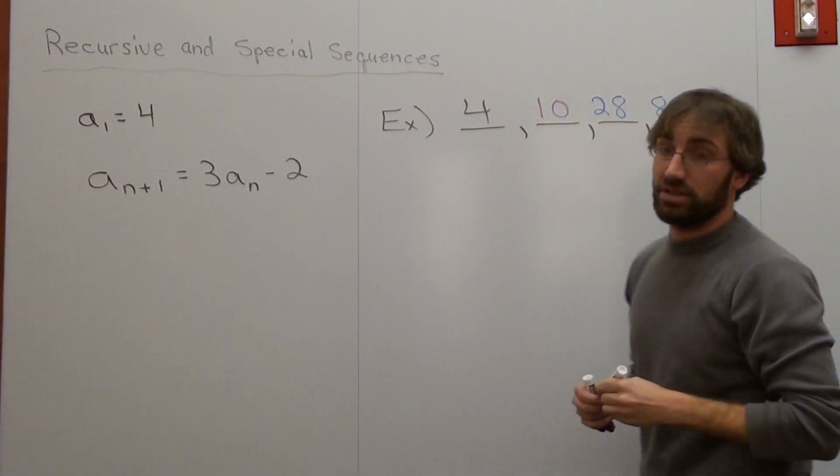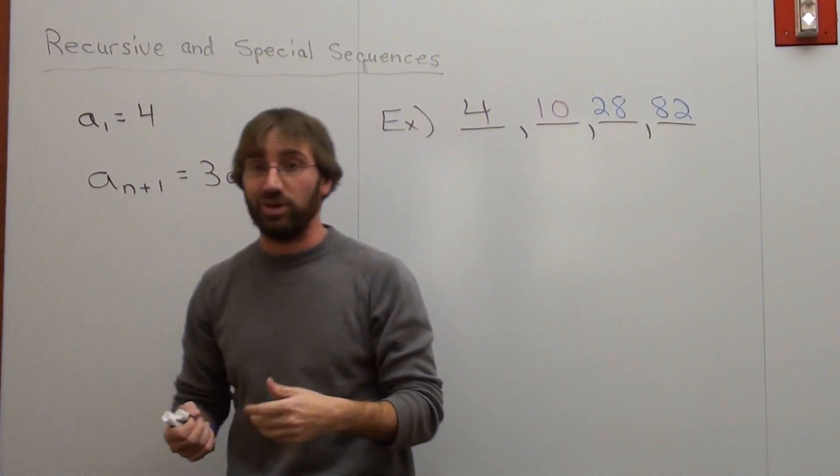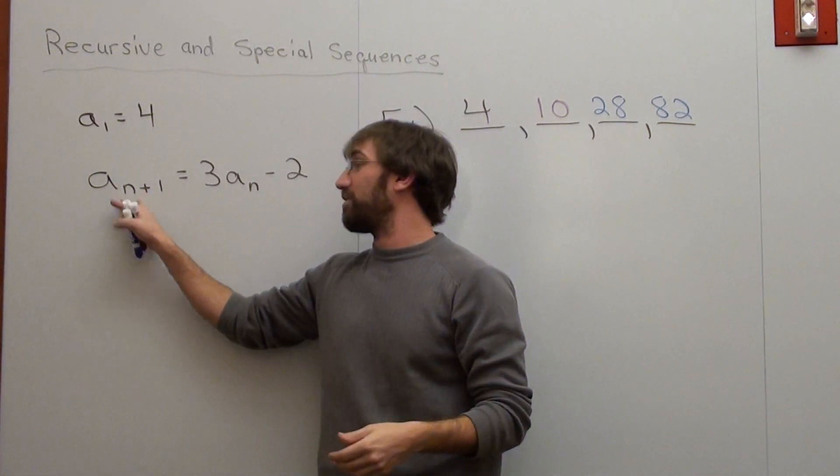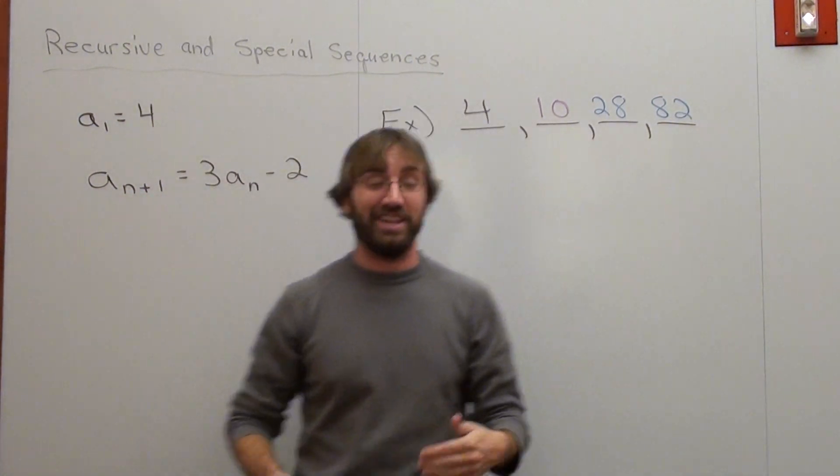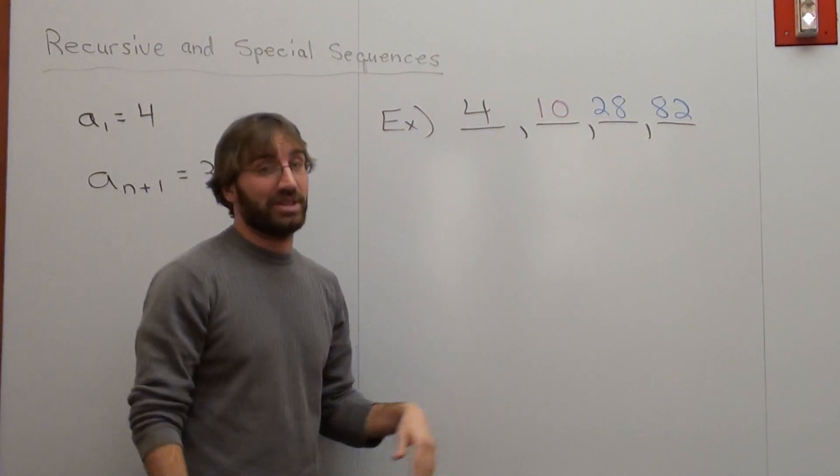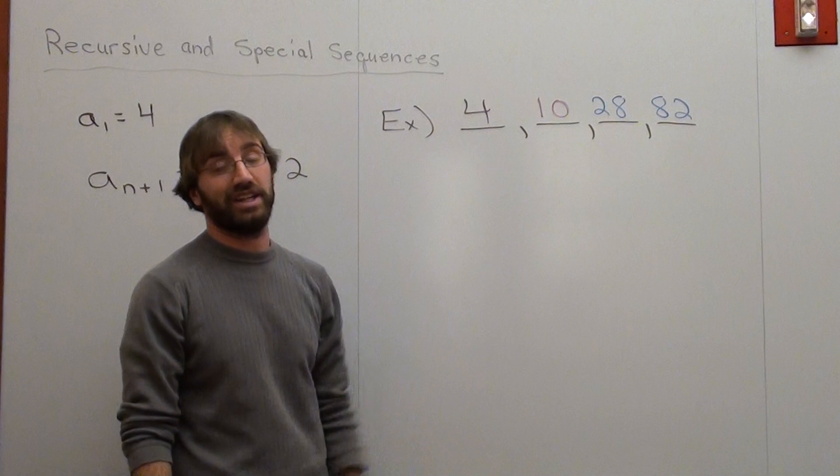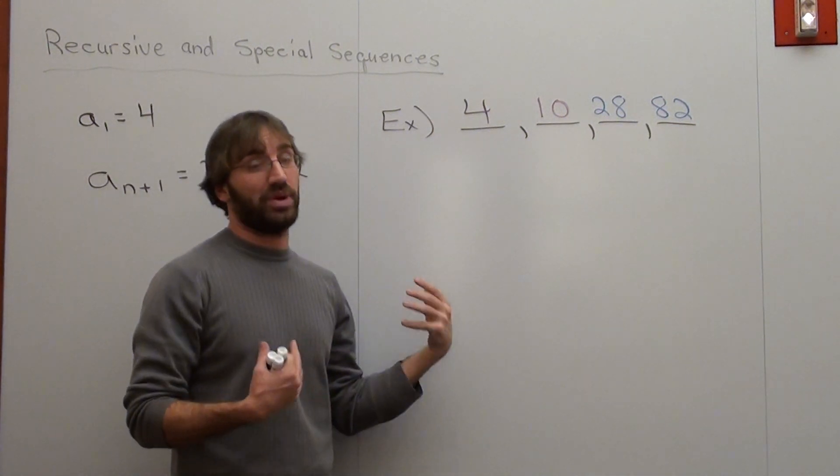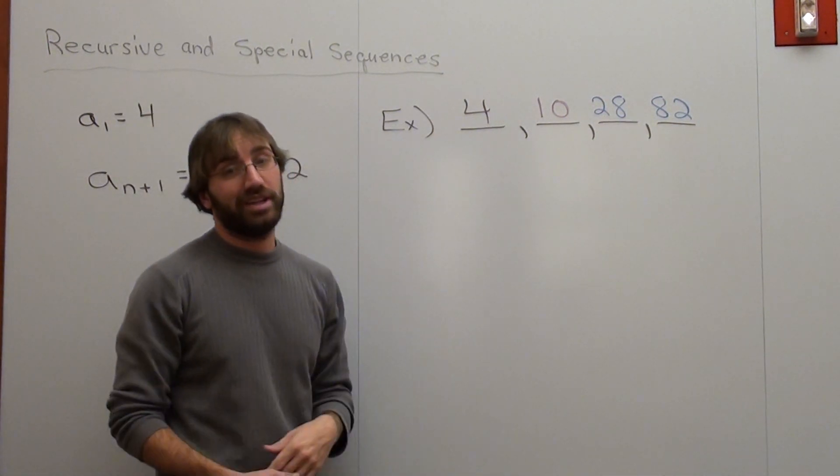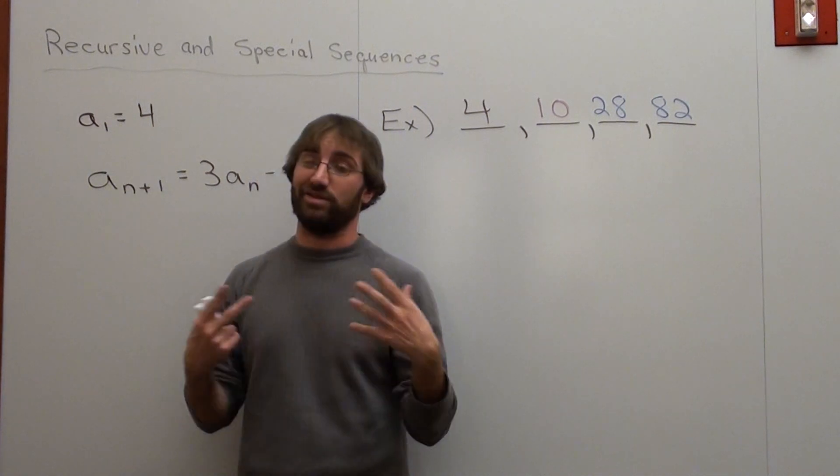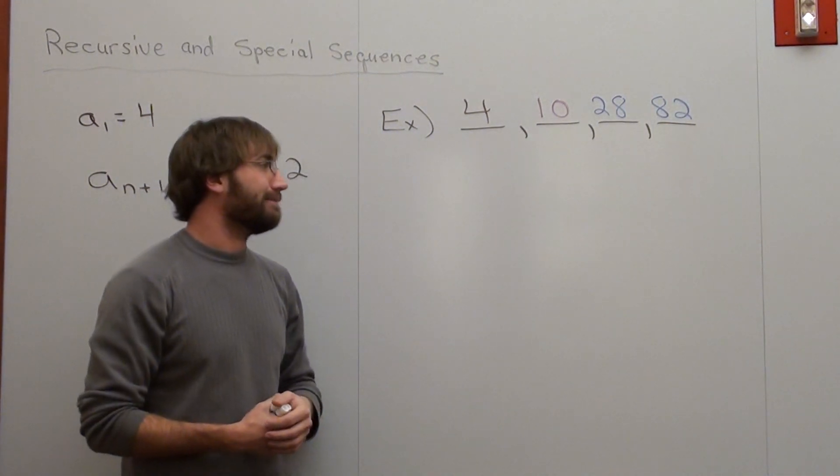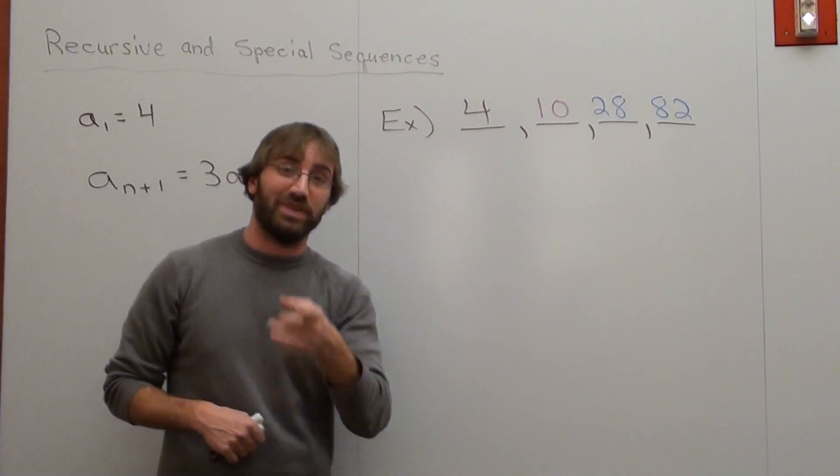So pretty much that's it. Just go ahead and substitute the previous value in to figure it out, especially when you've got this n plus 1 and n stuff. That's really all there is to it in that particular example. So those are the first four terms: 4, 10, 28, and 82. That's how I explain it really quickly. It usually seems to work pretty well. When I focus on the subscripts, things get confused. That's it. I hope that was helpful. Have a good day. Goodbye.